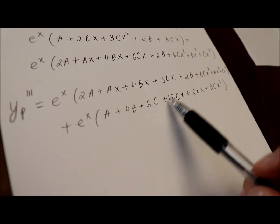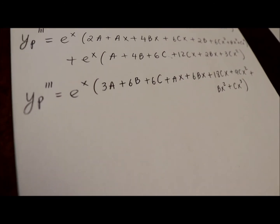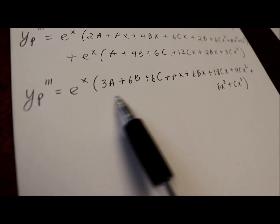Alright, now let me combine like terms between this and this. Alright, so we're getting this long expression. I also factored out e to the x for convenience.